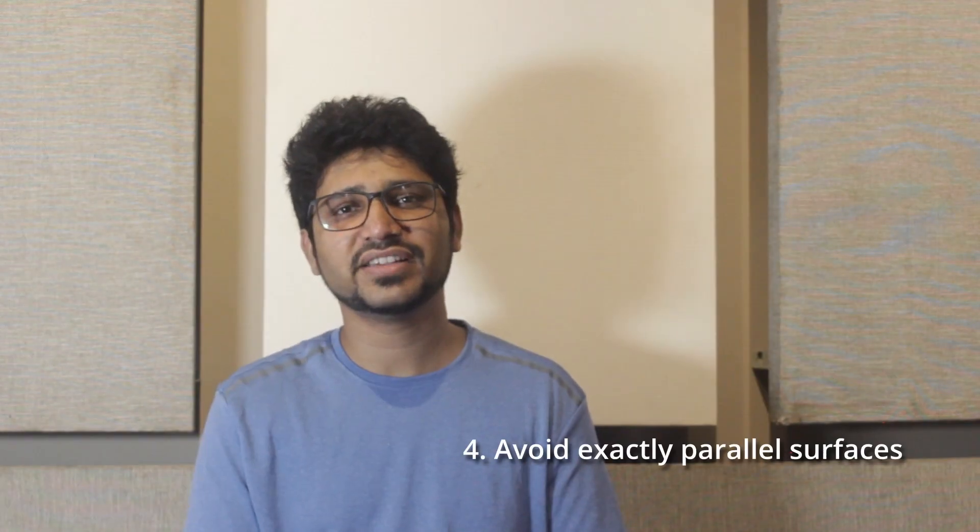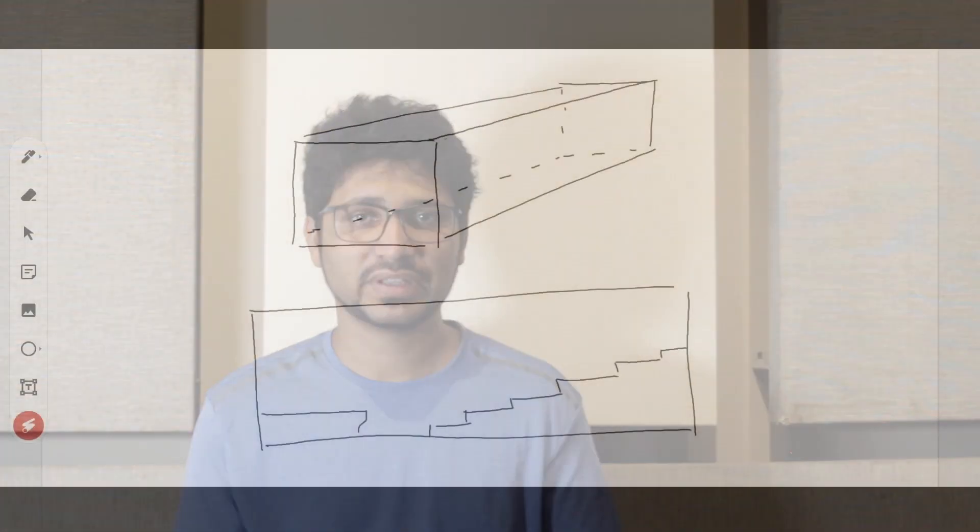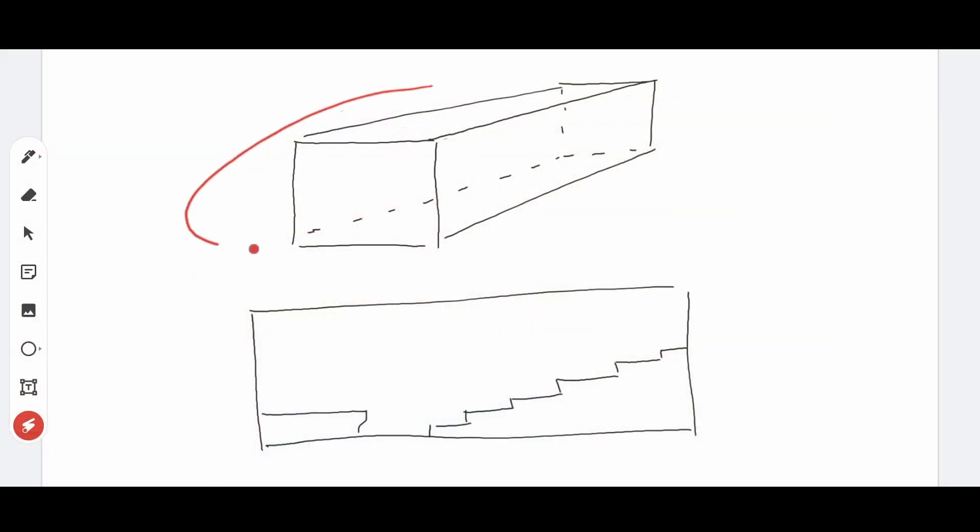Fourth point is having exactly parallel surfaces. It is common to have halls shaped as a shoebox, slopes, stairs, having side walls parallel to each other. That causes an annoying effect called flutter echo.